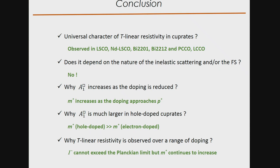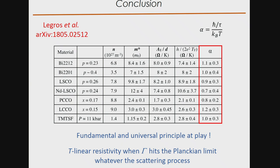To conclude: because the scattering rate cannot exceed the Planckian limit but m* continues to increase, we observe a broad range of doping where the resistivity is linear. This table of numbers — including the organic superconductor TMTSF, for which α is again 1 ± 30% — and Nigel's results on iron selenide also seem to obey Planckian dissipation. All these experimental observations seem to point to a fundamental and universal principle at play: T-linear resistivity appears when the scattering rate hits the Planckian limit, whatever the scattering process or the Fermi surface topology. Thank you for your attention.